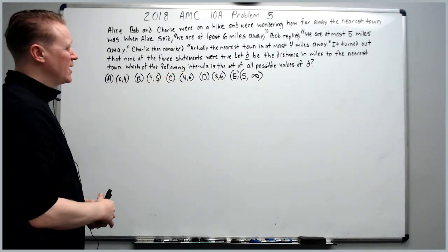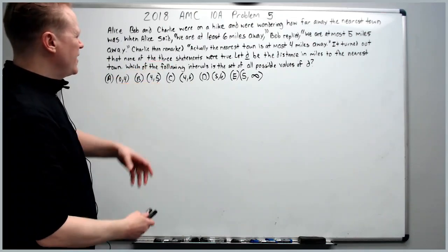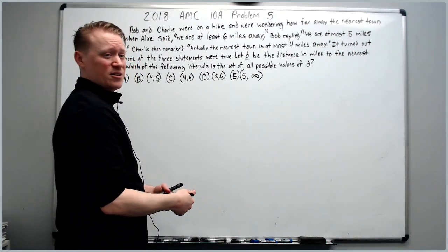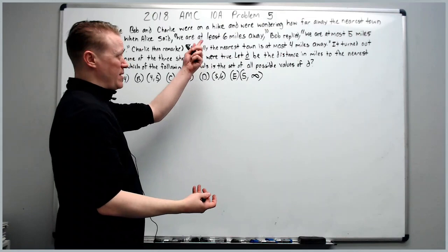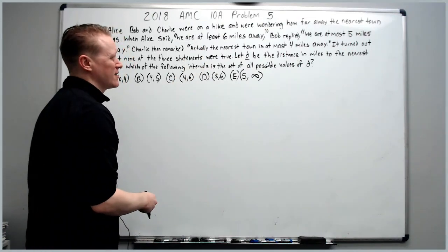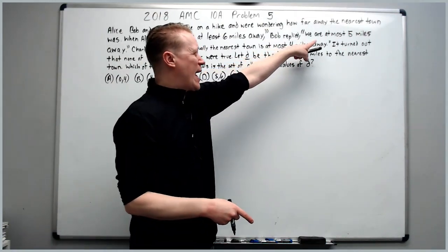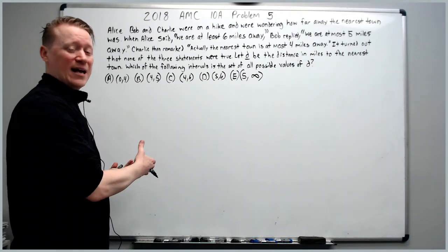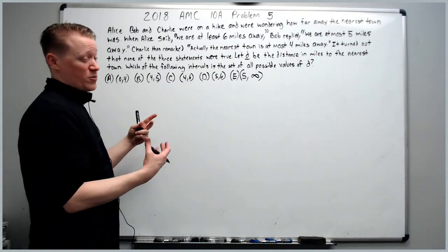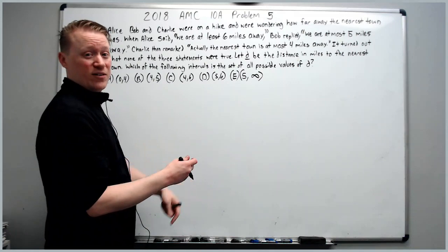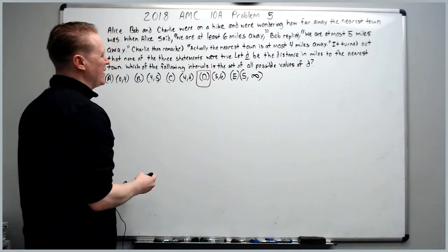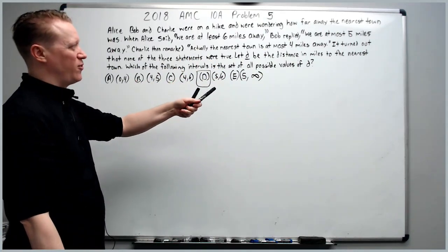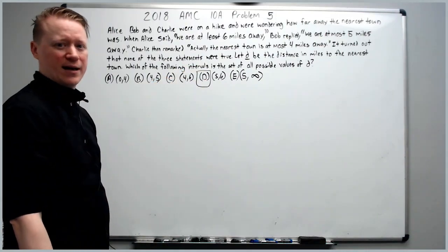So if none of them are telling the truth, at least 6 miles away would be 6 to infinity. So it can't be more than 6 because that would mean she's telling the truth. So it has to be less than 6. But Bob said we are at most 5 miles away. Well, if you're at most 5, you would be 5 or less. And since Bob is a liar, or he's wrong, it must be greater than 5. And the only answer that has that is D. It doesn't actually matter what C says because his doesn't really change anything. At most 4 miles away is just more restrictive than Bob's reply.